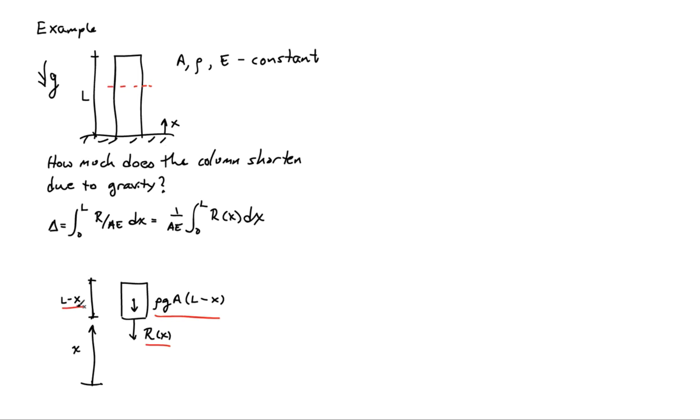If I enforce equilibrium on this free body diagram, I have that R of X is equal to rho GA times X minus L. So notice I flip the X and the L in the expression there. I can now plug this expression back into this relationship here, and I can then compute the integral.